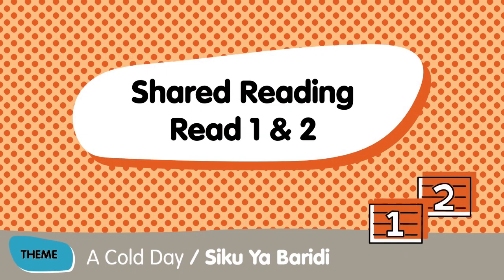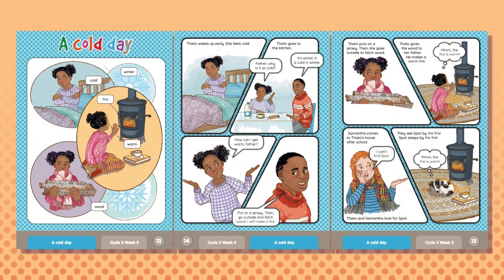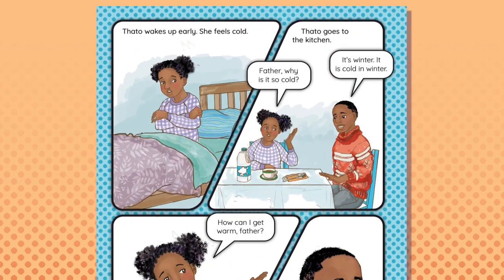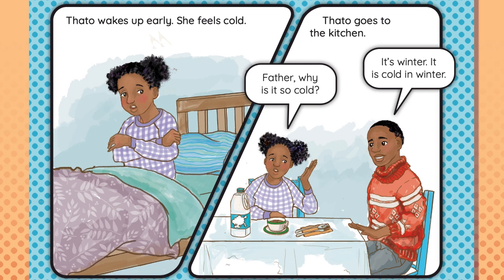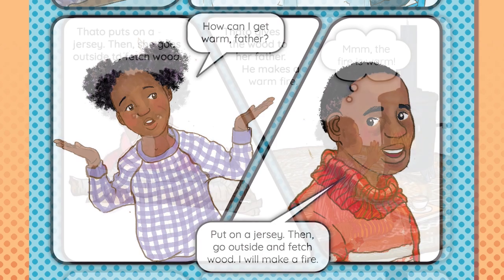Shared reading. Read one and two. Read the story in the learner book and ask learners to follow along. A Cold Day. Tado wakes up early. She feels cold. Tado goes to the kitchen. Father, why is it so cold? It's winter. It is cold in winter. How can I get warm, father? Put on a jersey. Then, go outside and fetch wood. I will make a fire.